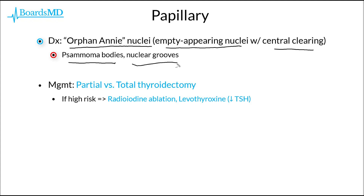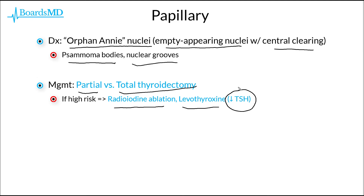Much like our other types of thyroid cancers, the hallmark of management in papillary cancer of the thyroid is going to be either a partial or total thyroidectomy. For high-risk patients, we can supplement surgery with the use of radioiodine ablation, as well as giving levothyroxine in order to suppress the patient's TSH. This decreases the amount of TSH stimulation of the thyroid, thus increasing our chances of ultimately getting rid of this tumor, since we do not want continued TSH stimulation of the very tissue we are trying to eliminate.